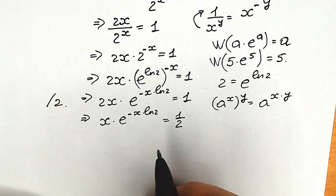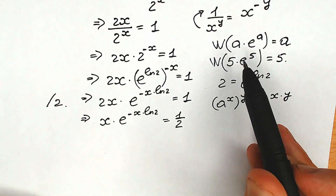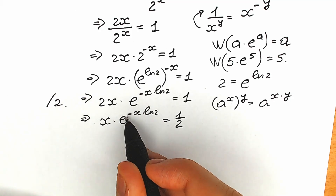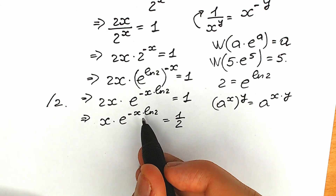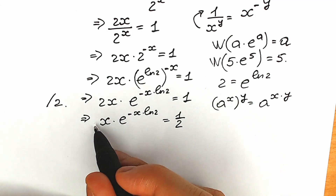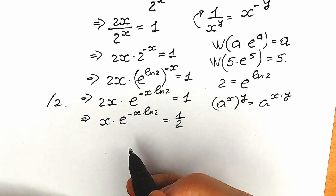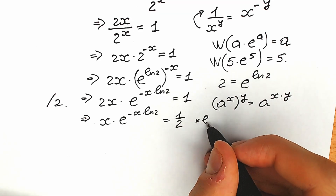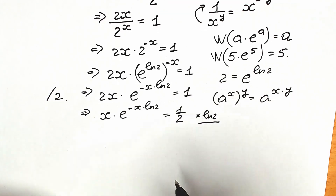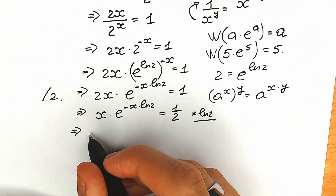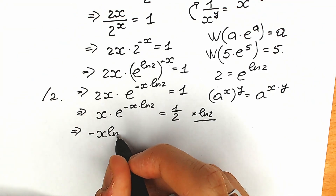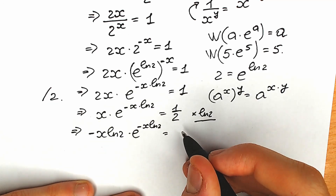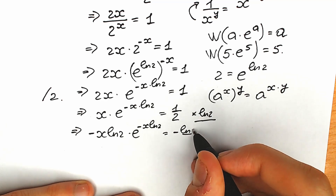Looking closely, we have e and we need to have the same expression in the exponent as the coefficient. We have x but we need minus x natural log 2, so we need to multiply both sides by minus natural log 2. When we multiply both sides by minus natural log 2, we get minus x times natural log 2 times e to the power minus x times natural log 2, equal to minus natural log 2 over 2.